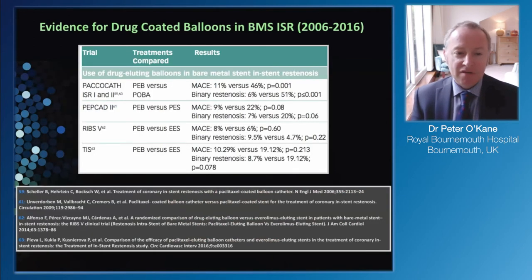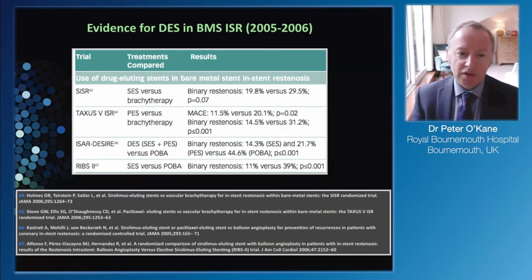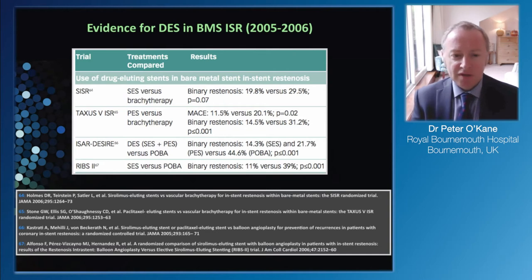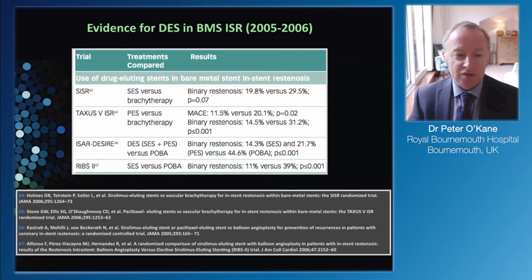Six-month follow-up suggested an increase in luminal area. Not a huge study, but it gives an idea. In the bare metal stent era there were lots of comparisons with different devices. Drug-eluting balloons versus drug-eluting stents - these studies are all available in the paper. We're not really using bare metal stents anymore. Brachytherapy was compared against drug-eluting stents, with brachytherapy being inferior quite frequently. We don't really use brachytherapy in the UK, but certainly in America they're still being used.